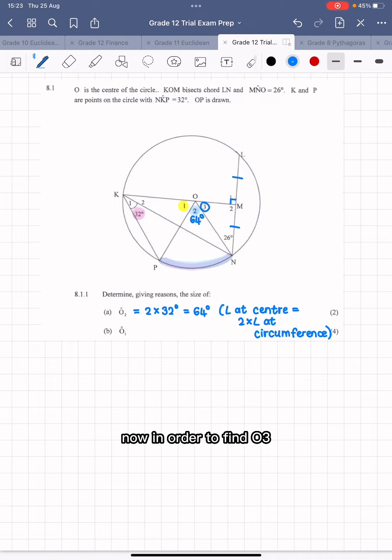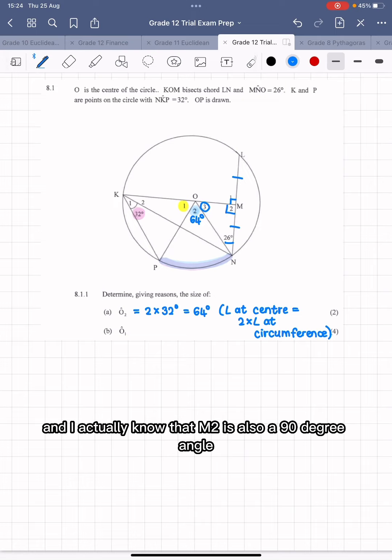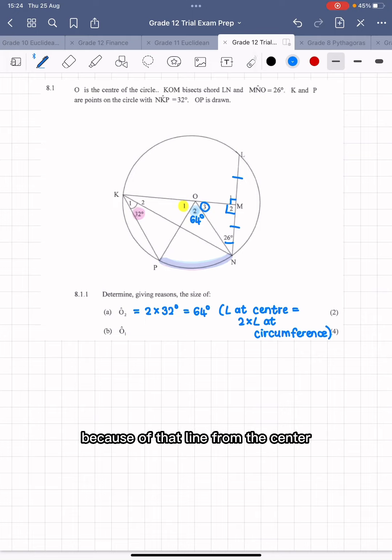Now in order to find O3, we have a 26 degree angle there, and I actually know that M2 is also a 90 degree angle, because of that line from the center that is bisecting that chord. So for B, I'm going to have to write down a couple of steps.